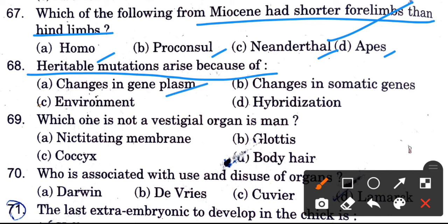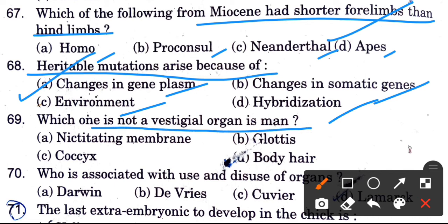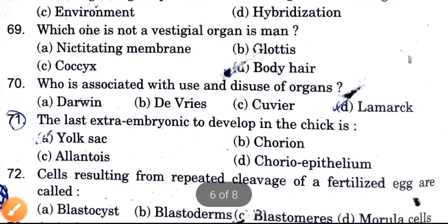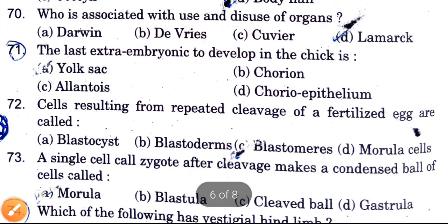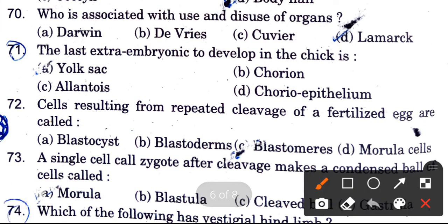Heritable mutations arise because of — options are change in gene plasma, changes in somatic genes, movement, and hybridization. The answer is change in gene plasma. Which one is not a vestigial organ in men? Options are nictitating membrane, glottis, coccyx, and body hair. The answer is glottis.